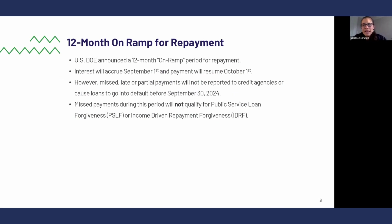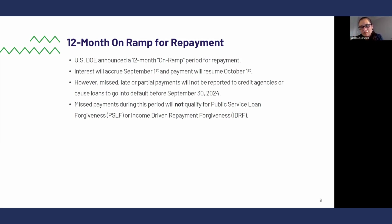An additional thing that just came out was a 12-month on-ramp for repayment. The current administration acknowledges that getting 43 to 45 million student loan borrowers back into repayment is going to be a hurdle and that some people may fall behind. So rather than reporting those as delinquencies to the credit bureaus, they're going to give more or less like a free pass — they're not going to report delinquency and defaults for the first 12 months after repayments resume. However, interest is going to start accumulating, and any month that you do not actively pay is not going to count for forgiveness programs like public service loan forgiveness and income-driven repayment forgiveness. We highly encourage people to be ready to repay and have the right repayment plan by October, but rest assured that if you miss a payment, at least for the first 12 months, you're not going to be reported to the credit bureaus.